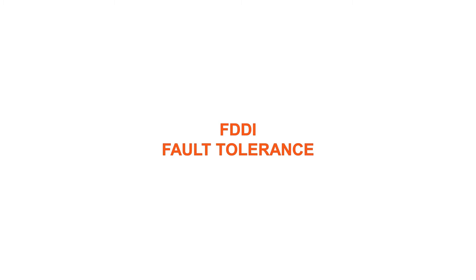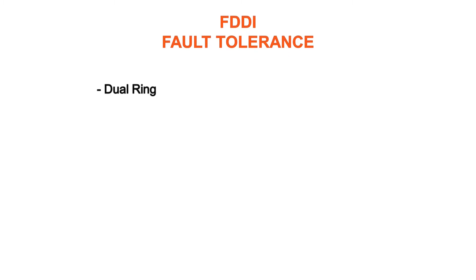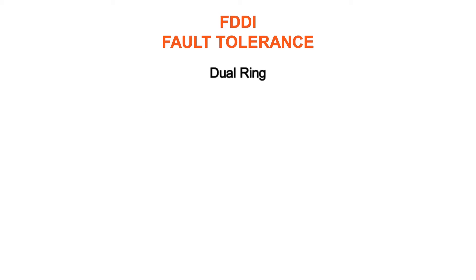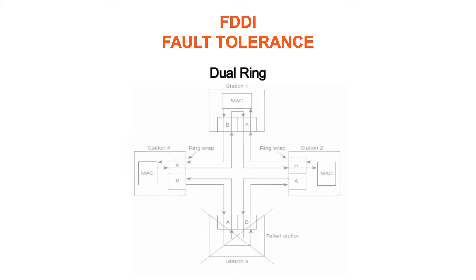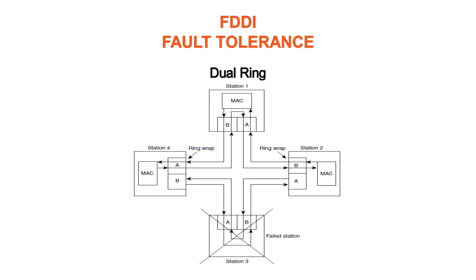FDDI provides a number of fault-tolerant features. In particular, FDDI's dual ring environment, the implementation of the optical bypass switch, and dual homing support make FDDI a resilient media technology. FDDI's primary fault-tolerant feature is the dual ring. If a station on the dual ring fails or is powered down, or if the cable is damaged, the dual ring is automatically wrapped into a single ring. When the ring is wrapped, the dual ring topology becomes a single ring topology. Data continues to be transmitted on the FDDI ring without performance impact during the wrap condition.